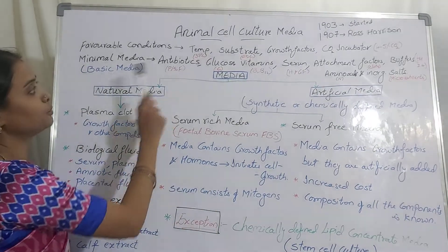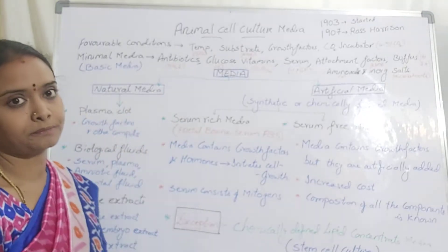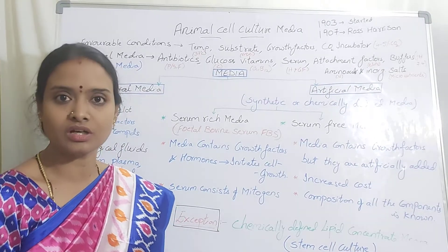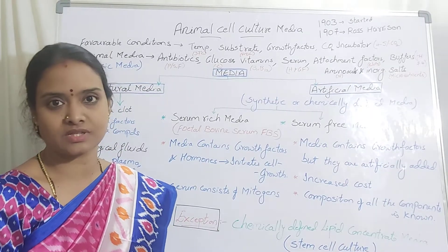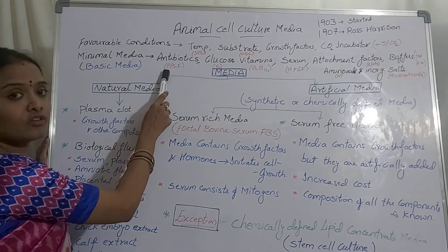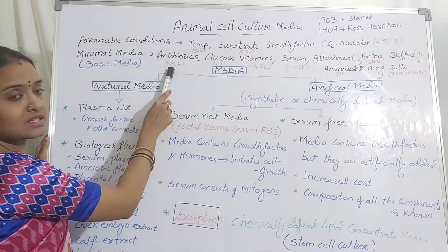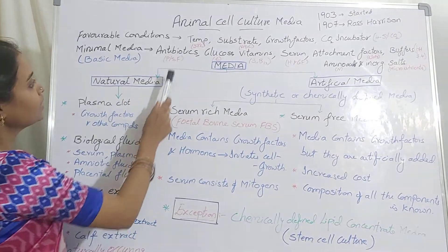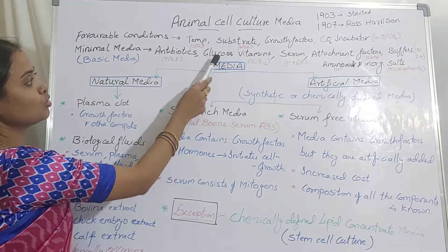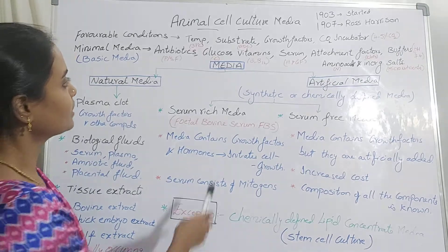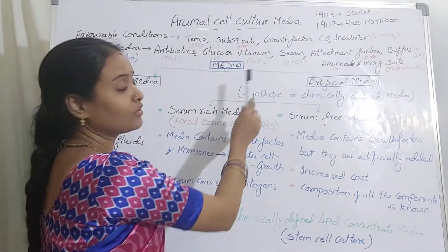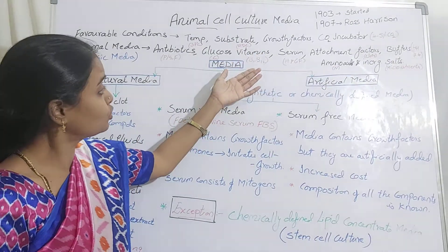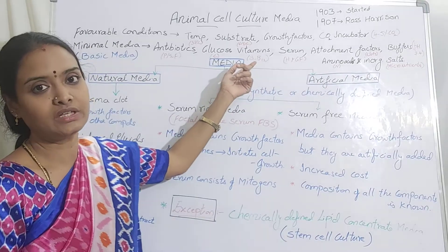Why are antibiotics required? To avoid contamination by bacteria, fungi, or mycoplasmas. We mostly use penicillin, streptomycin, or fungizone to avoid bacterial and fungal contamination. Glucose acts as a carbon source. Vitamins — mostly B1 and B12 — are provided to obtain optimal growth of the cells.